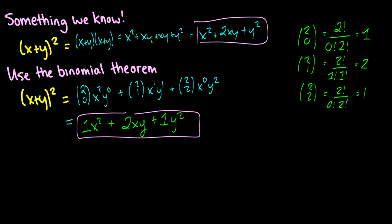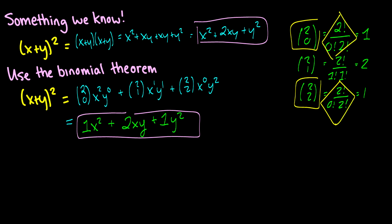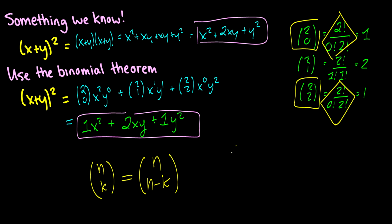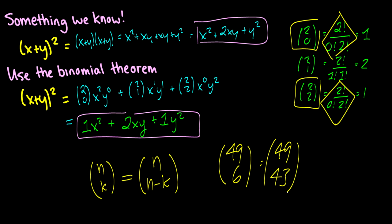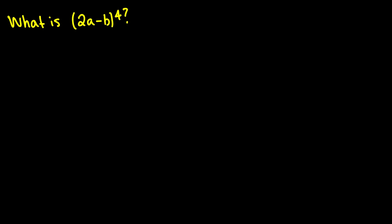Here's a cool aside: 2 choose 0 and 2 choose 2 have the exact same formula, which illustrates that n choose k equals n choose (n − k), so you can use these interchangeably. For example, 49 choose 6 is the same thing as 49 choose 43. We'll see a nice application of this very shortly.